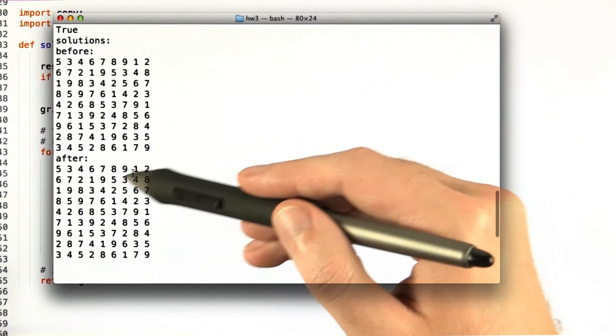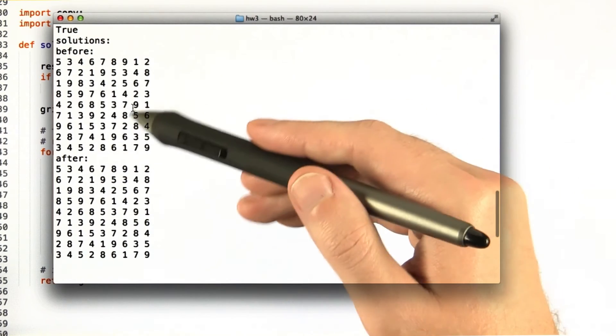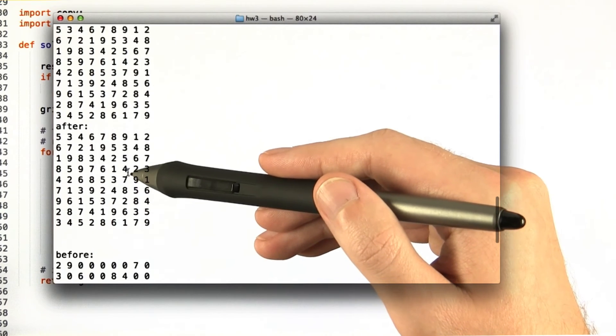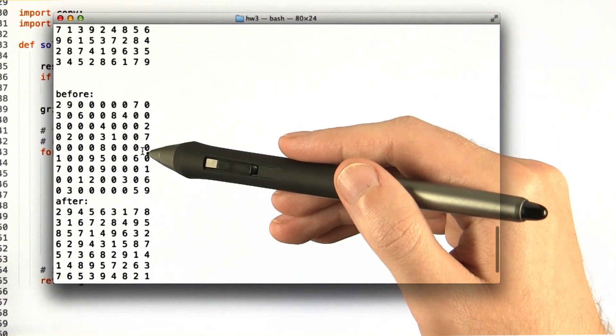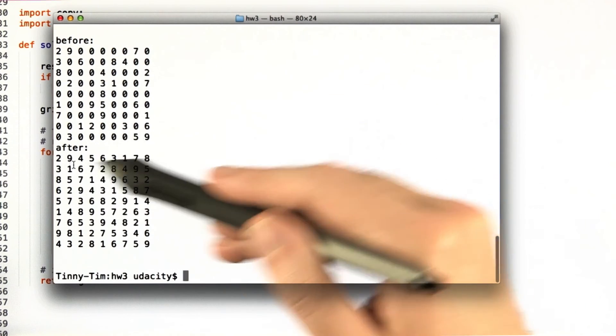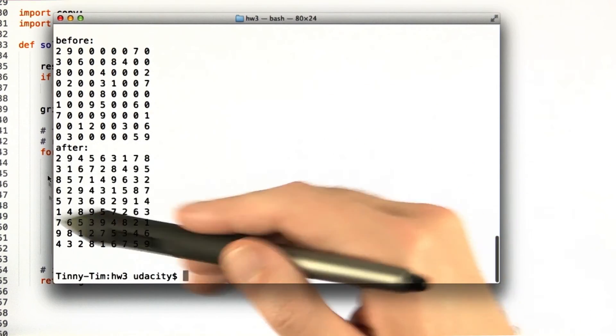So then it shows that the valid and full already solved board is the exact same and the easy board it's filled out with a valid sudoku board solution.